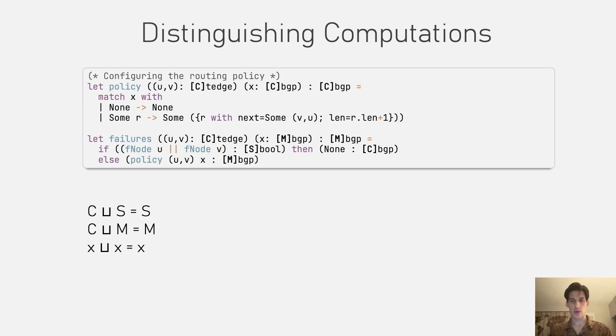Types are annotated with a computation mode. So in addition to the type of the value computed, they also give us information about the computation mode that is used.